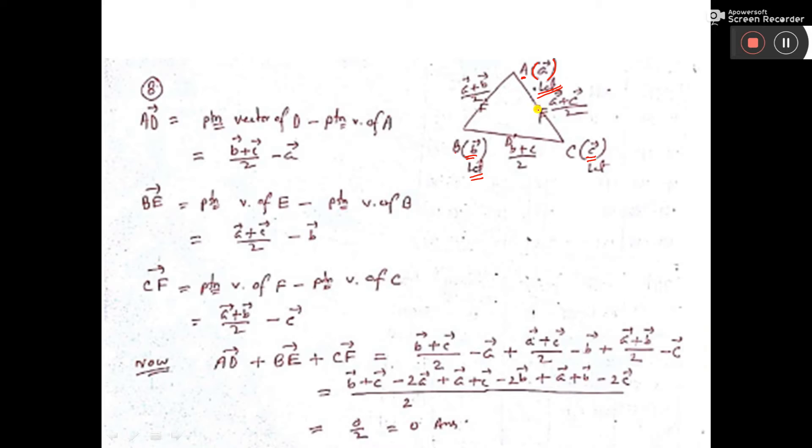Now the midpoint of AC is (a + c)/2. The midpoint of BC is (b + c)/2, and the midpoint of AB is (a + b)/2.